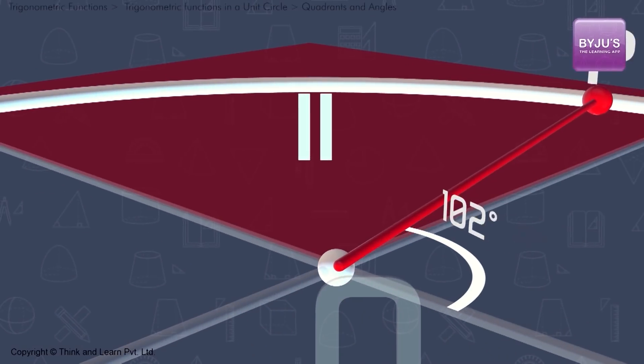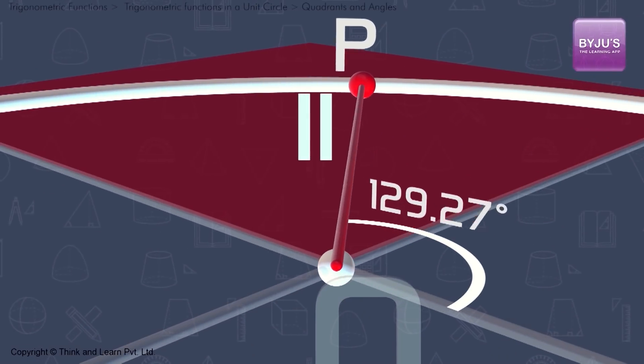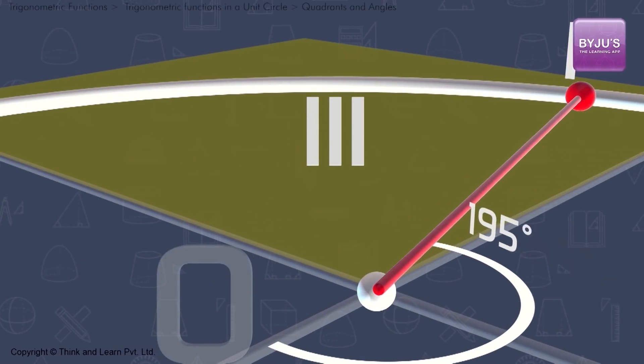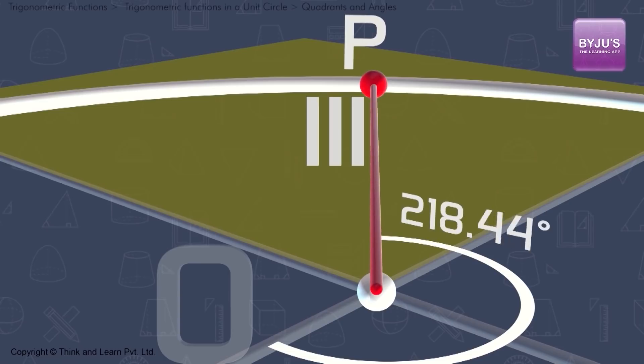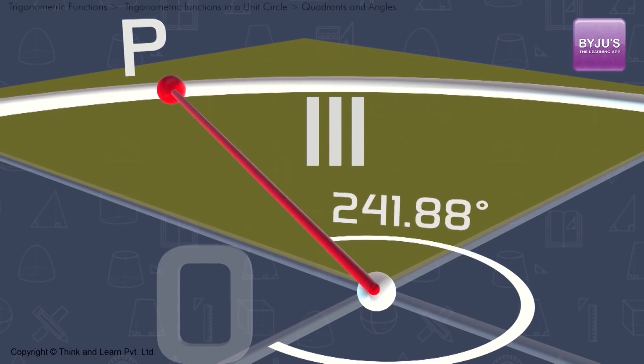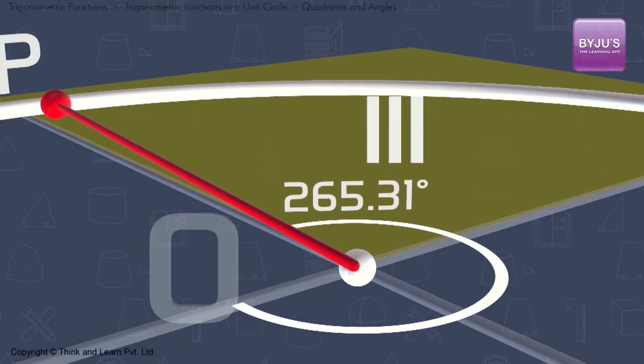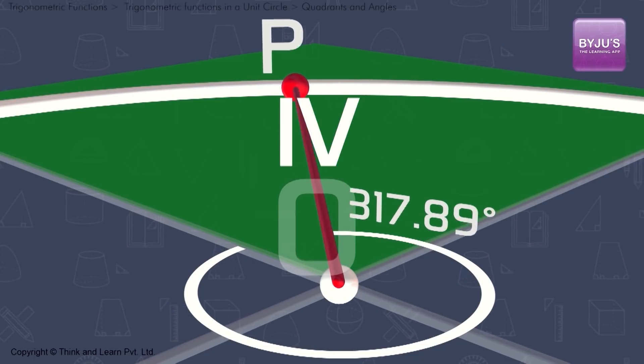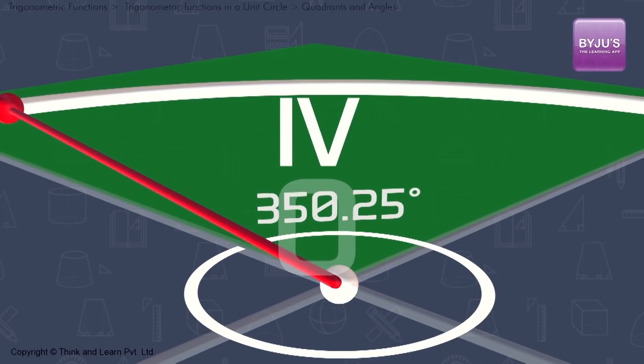When P moves into the second quadrant, the angle lies between 90 degrees and 180 degrees. When P moves into the third quadrant, the angle is greater than 180 degrees but less than 270 degrees. Finally, when P is in the fourth quadrant, the angle is between 270 degrees and 360 degrees.